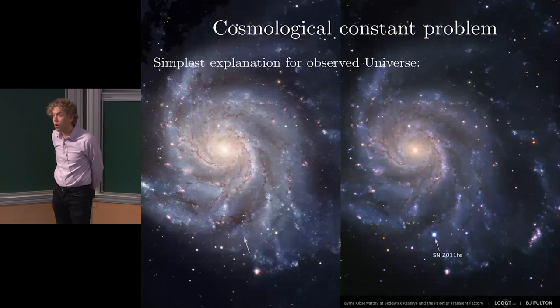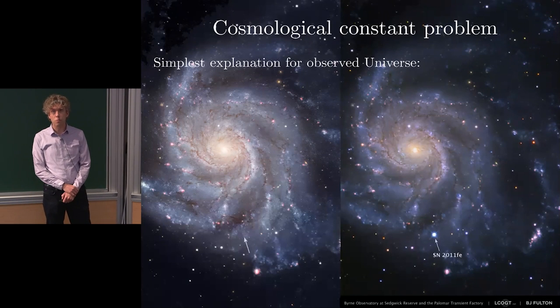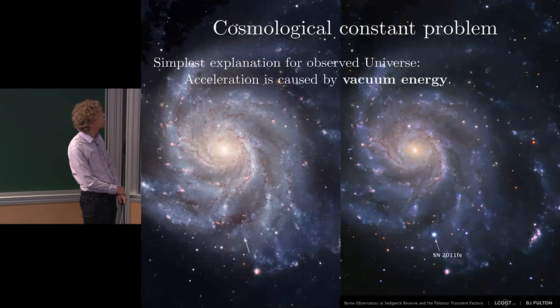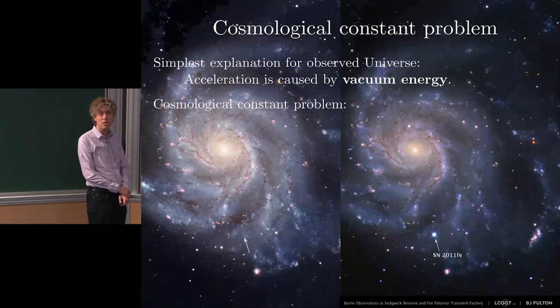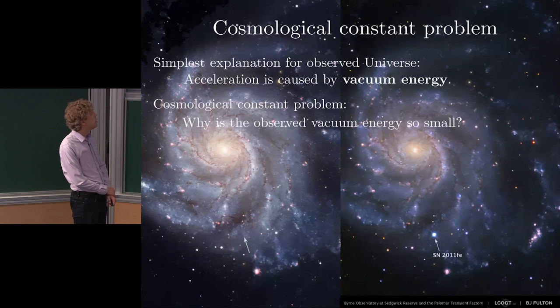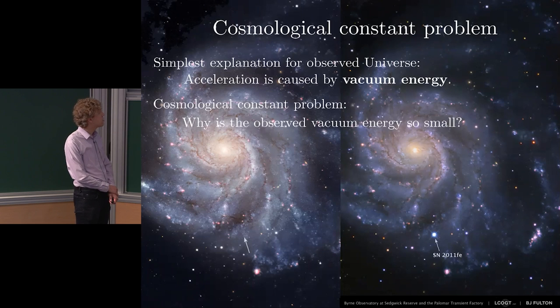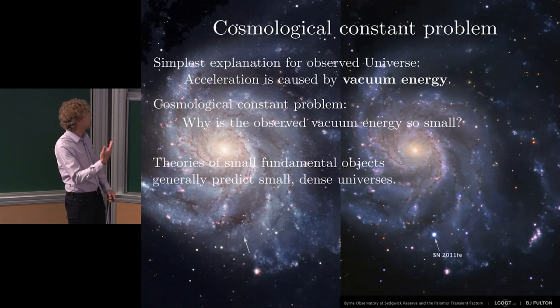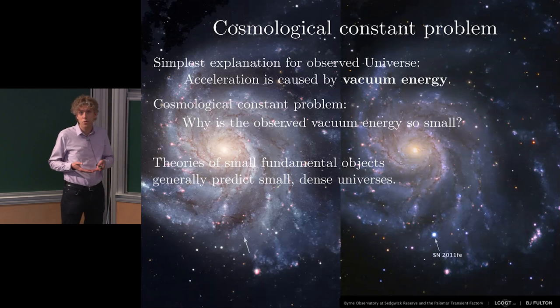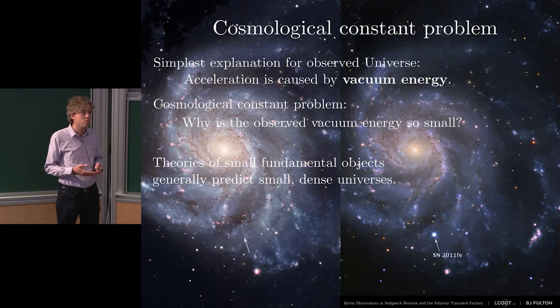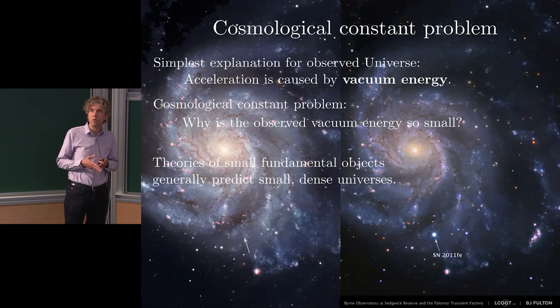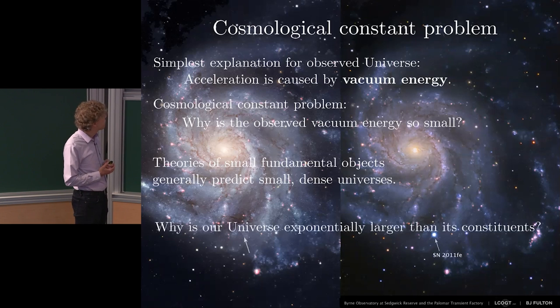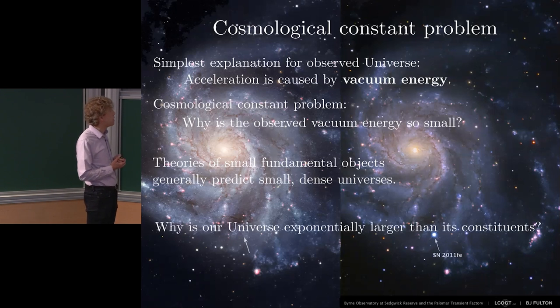Just a bit about the physics motivation for this line of work. As we all know, the cosmological constant problem is a severe crisis. The simplest explanation for the observed universe is that the acceleration is caused by vacuum energy, and the problem is why is the vacuum energy so small? I find it useful to talk about the idea that theories of small fundamental objects characteristically produce small dense universes. If you have a theory made of strings, you ought to expect the universes that result to be string size. Why is our universe exponentially larger than its constituents?